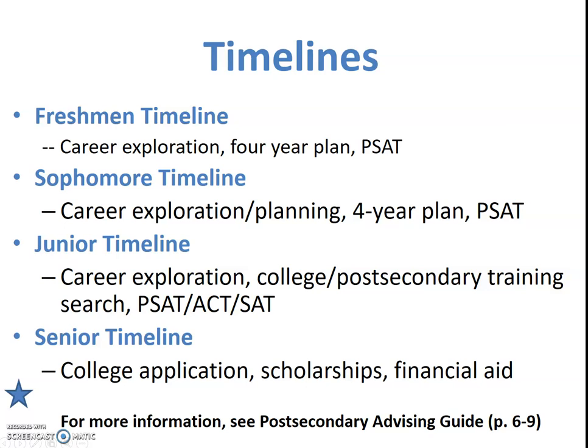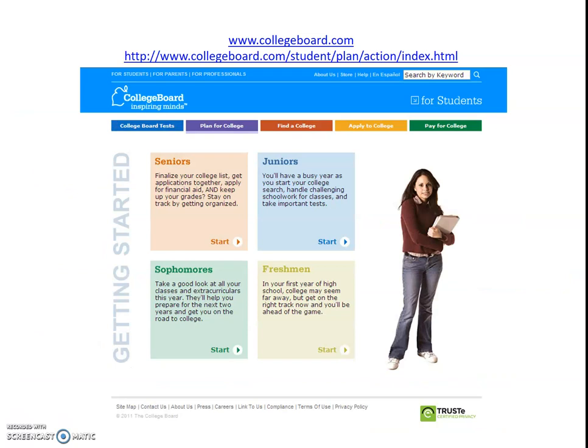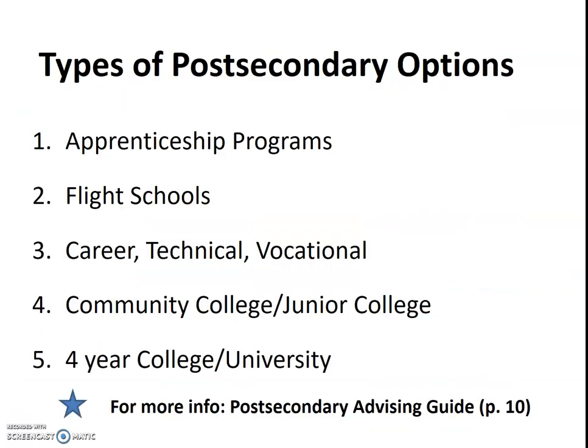We have quite a few timelines established and these are available on Counselor's Corner and also in our post-secondary advising guide. There is a recommended timeline for each grade level, and you can find customized timelines on College Board. When we're talking about post-secondary options, we're including apprenticeship programs, flight schools, vocational schools, community colleges, and four-year colleges — all viable training opportunities after high school.